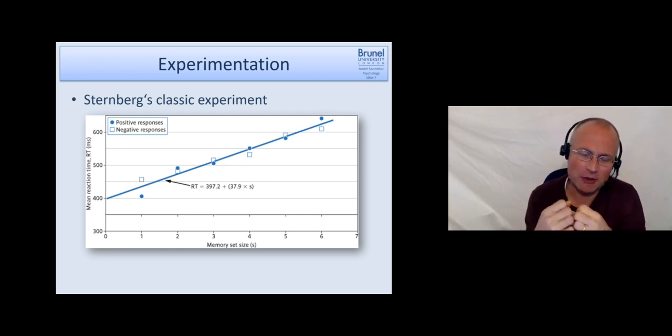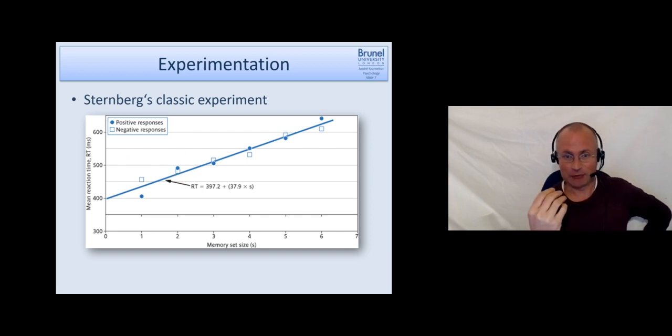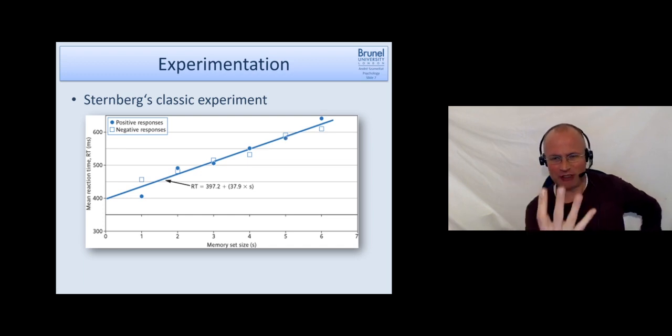Now he made another interesting observation. If you look at this graph, there are two data points for each set size, and these filled circles are positive responses, that means the item we looked for was actually in the set so they had to press yes. The open squares are negative responses, that means you presented four numbers and asked for a number which wasn't in the set so people had to press no. What is curious and I don't think it was expected by him is that yes and no responses actually take roughly the same amount of time.